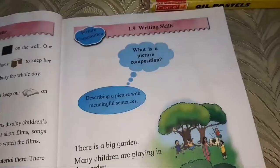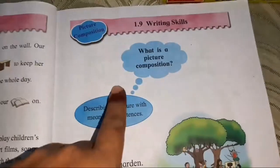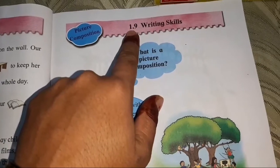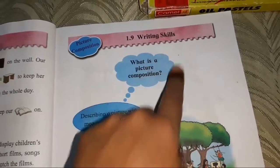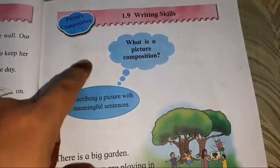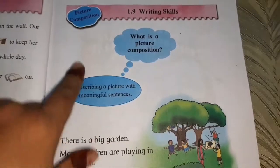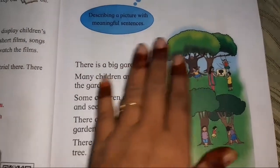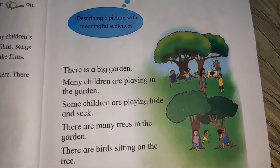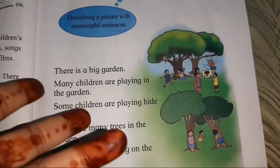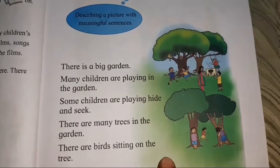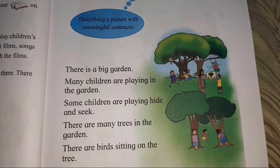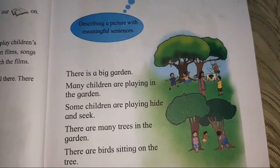Hello kids. Today we will learn topic 1.9 writing skill: picture composition. Picture composition means we have to see the picture and tell about what they are showing in the picture in meaningful sentences.